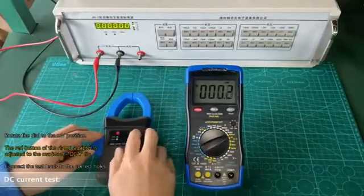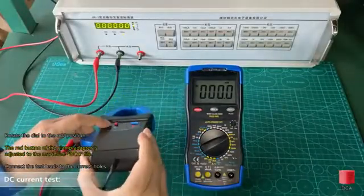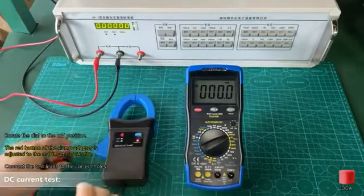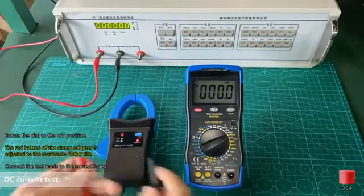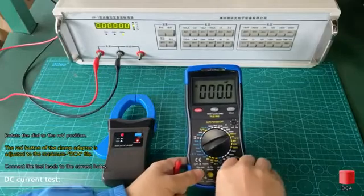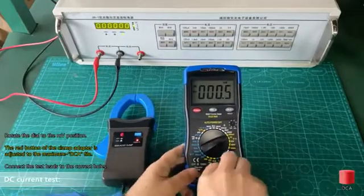DC current test: Rotate the dial to the MV position. The red button of the key clamp adapter is adjusted to the maximum DCA file. Connect the test leads to the correct holes.